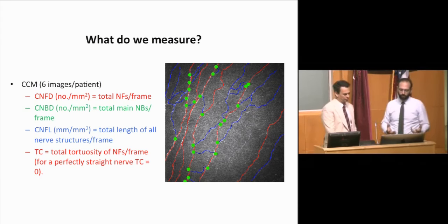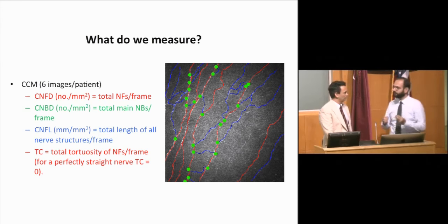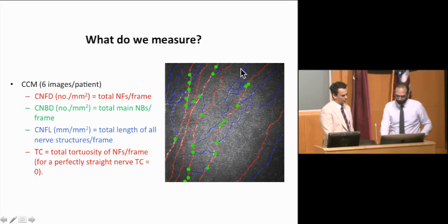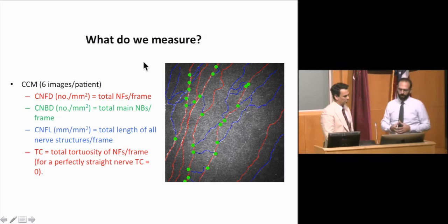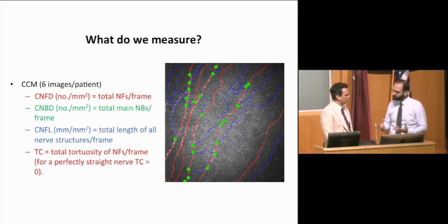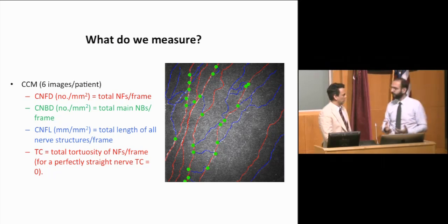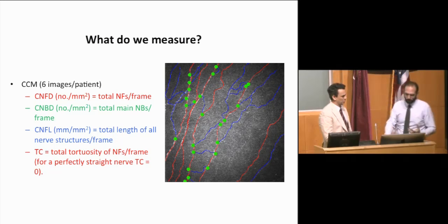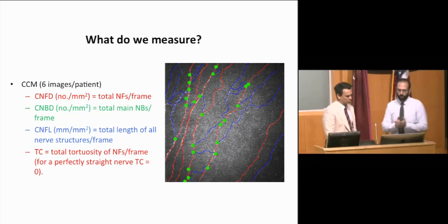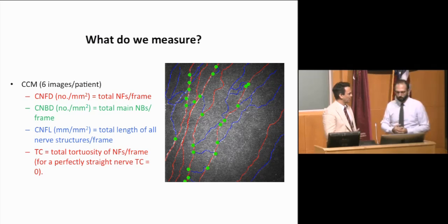Then we have corneal nerve branch density, which refers to the total number of nerve branches, that is main nerve branches, in the frame. Then is corneal nerve fiber length, which is the sum of the length of all nerve structures in the image, and that is branches and fibers. And finally, the tortuosity coefficient, that is a feature specific for nerve fibers. A perfectly straight nerve would equal a tortuosity of zero, and tortuosity goes up as the nerve deviates from a straight line. The higher the number, the more tortuous, and it goes up to infinity.